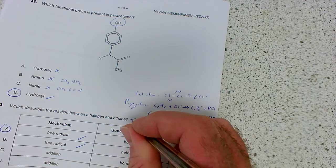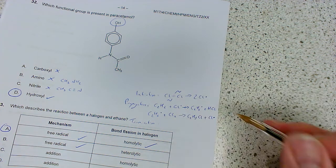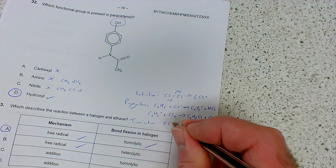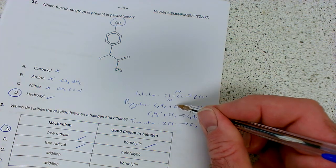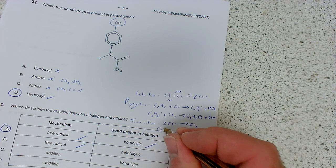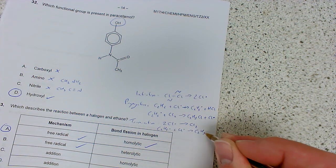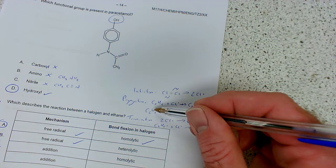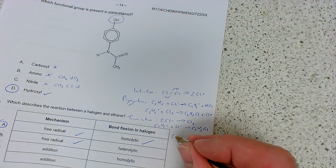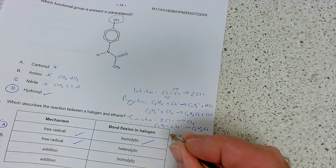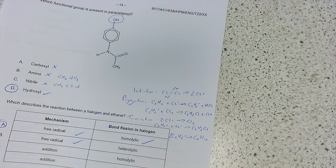The propagation steps keep going until termination, where two radicals take each other out. Simplest is the opposite of the first reaction - two chlorine radicals recombine to give Cl2. Alternatively, C2H5 radical combines with chlorine radical to give C2H5Cl, or two C2H5 radicals give C4H10 butane.